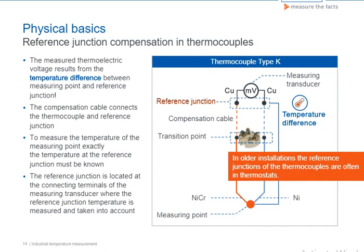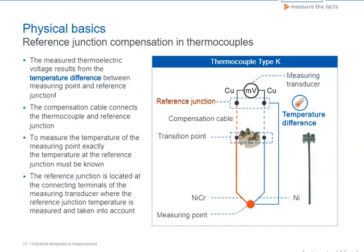In older installations, the reference junctions of the thermocouples are often in thermostats. Here, the compensation cable is connected to heated terminals whose constant temperature is known, for example 60 degrees Celsius. From there, the copper line wiring can proceed. The electronics measures the reference junction temperature of the thermostat and takes it into account for determining the correct temperature at the measuring point.